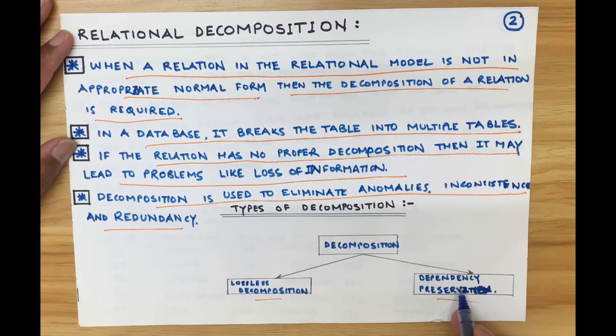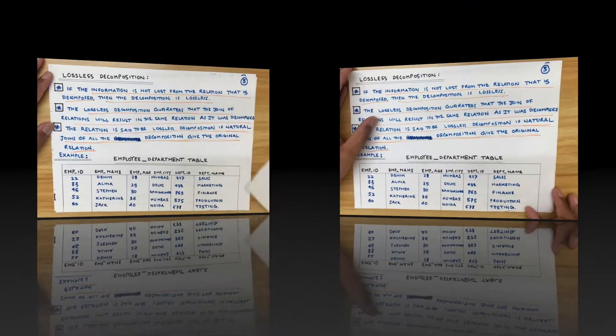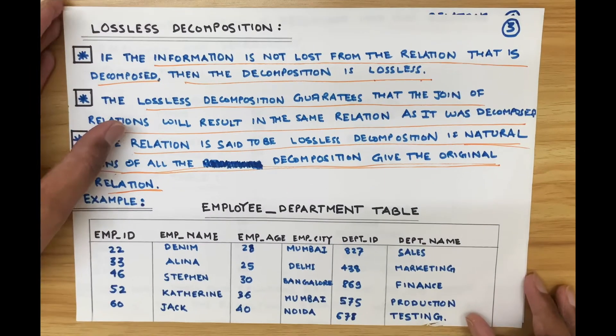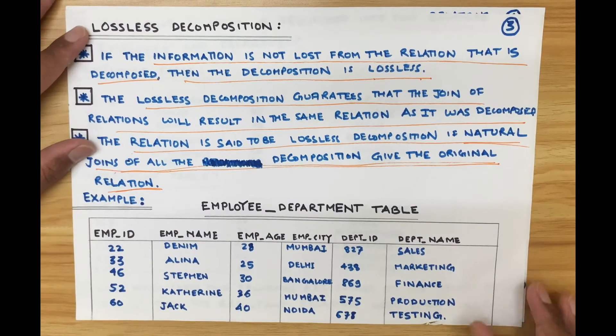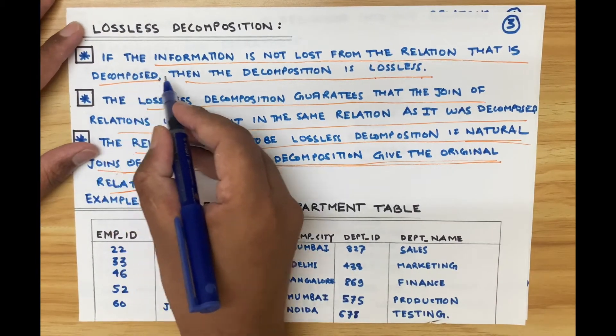There are two types of decomposition: lossless decomposition and dependency preserving decomposition. Let us look at them one by one.